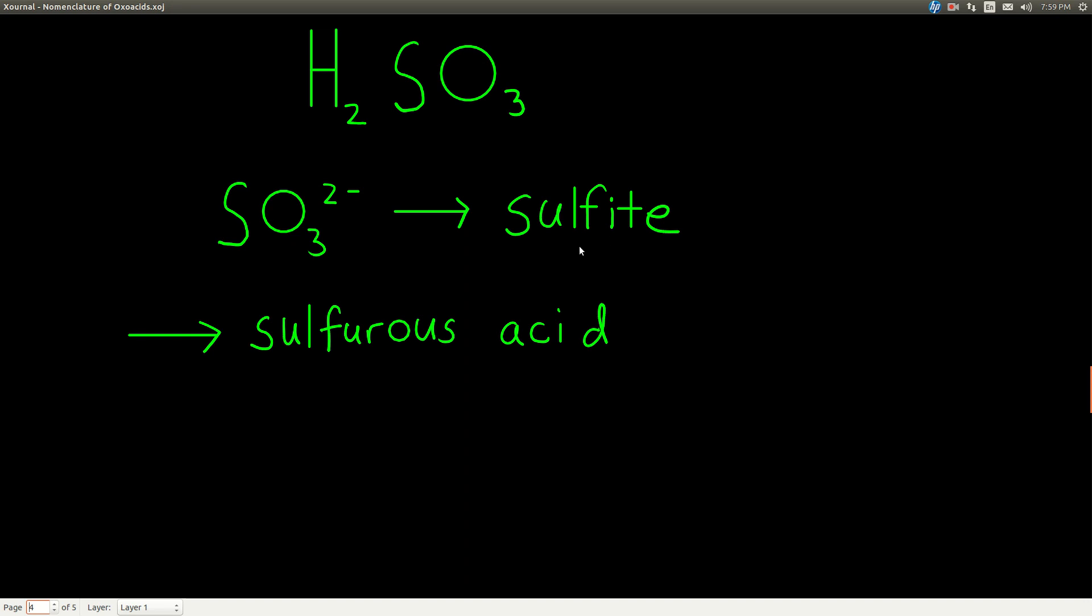And so we take the ite and make it ous. Now, polyatomic ions that contain sulfur and phosphorus are a little bit different. With sulfur, you put the UR back on before you change the ending. With phosphorus, you put the OR back on. So instead of just becoming sulfis, we say sulfurous, but then say the word acid. And we're done.